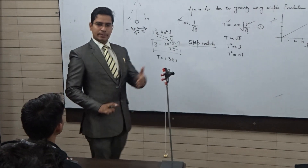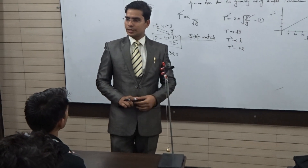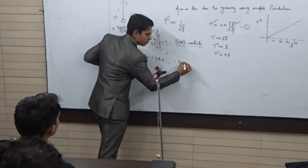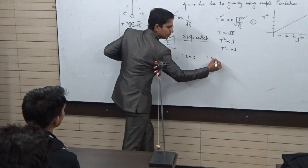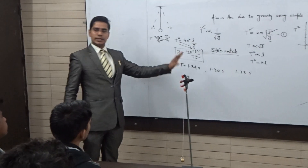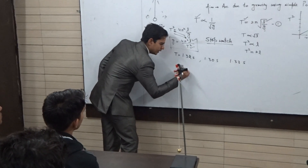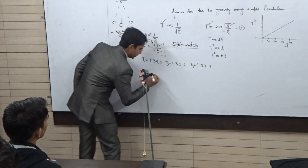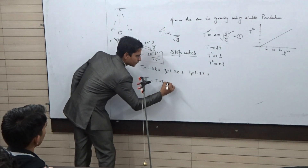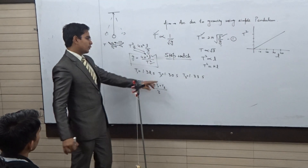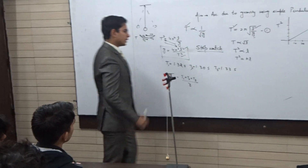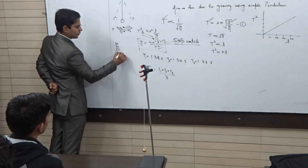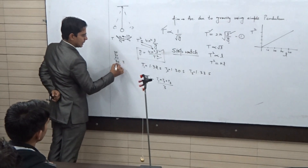You can repeat the experiment for 20 oscillations or 10 oscillations. You might get values like 1.30 seconds or 1.33 seconds. By taking at least three observations, we calculate the mean value: T_mean = (T1 + T2 + T3) / 3. For example, with values 1.30, 1.33, and 1.32 seconds, the sum is 3.95 and the mean T comes out to approximately 1.317 seconds.